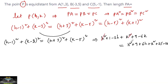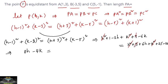We can cancel h² and k² from both sides. The remaining terms give: −2h + 6h = 8h on one side, and −10k + 6k = −4k. The constants: 1 − 25 = −24, and the 9s cancel. So 8h − 4k = −24, and dividing by 4 gives 2h − k = −6. This is equation one.